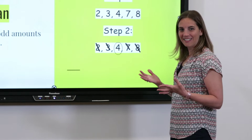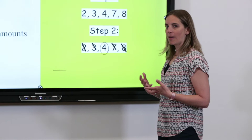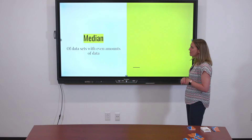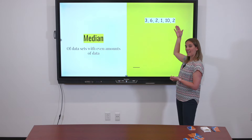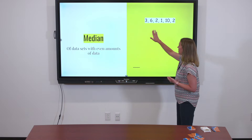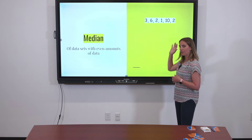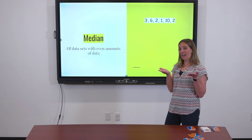Now this works anytime you have an odd amount of data. However, sometimes that's going to change. Take a look at this data: a three, a six, a two, a one, a ten, and another two. How many data points are there? Let's count them — one, two, three, four, five, six. If you're thinking ahead, you're realizing that when you get to the middle, you're not going to have a pair to cross off — you're going to have two numbers stuck right in the middle.